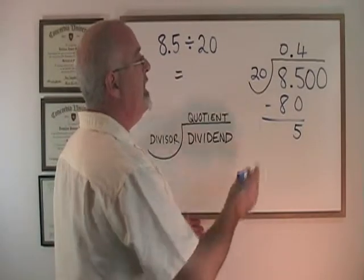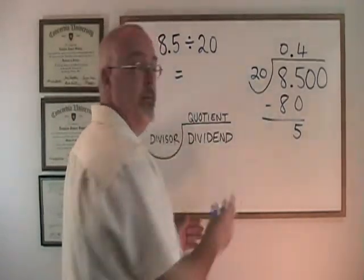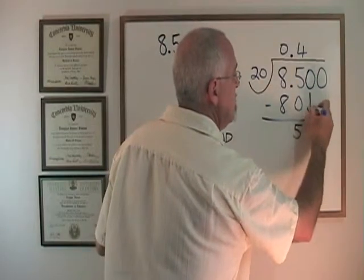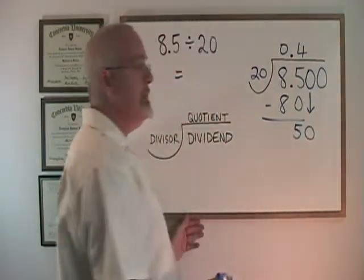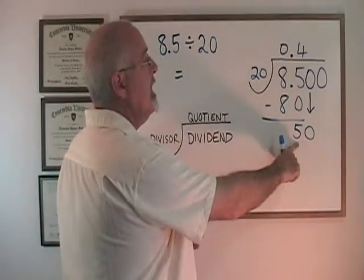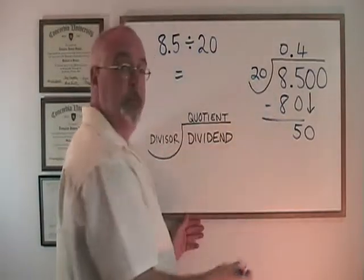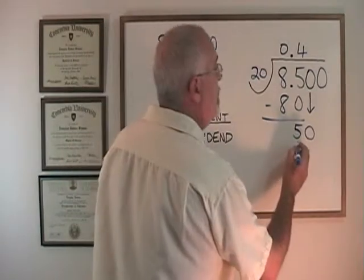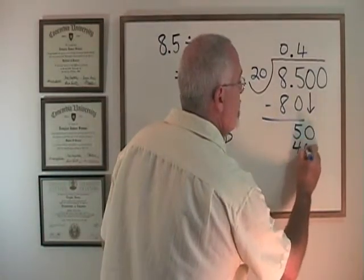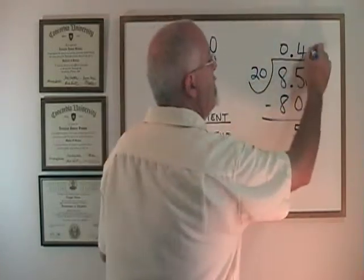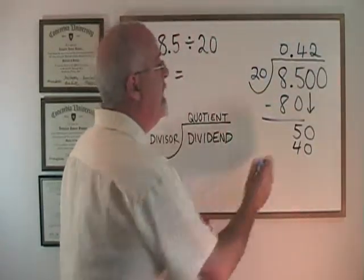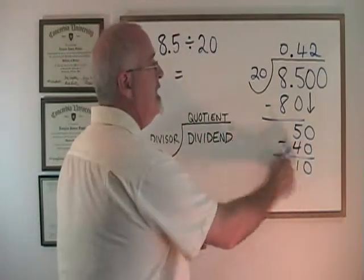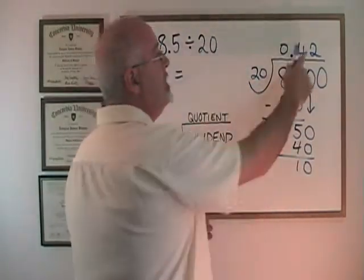This number has to be smaller than my divisor — it is — so I can continue. I already know that 20 will not fit into 5, so I have to bring down another 0. I slide one of these 0s down, and this is now 50. And I ask: does 20 fit into 50? Yes — twice with some left over. 2 times 20 is 40. So I write 40 here and I write the 2 here. I subtract and I get 10. Again, 10 is smaller than 20, so I chose the right number.